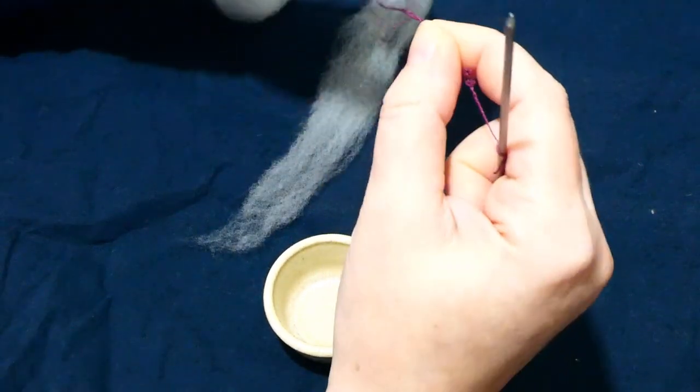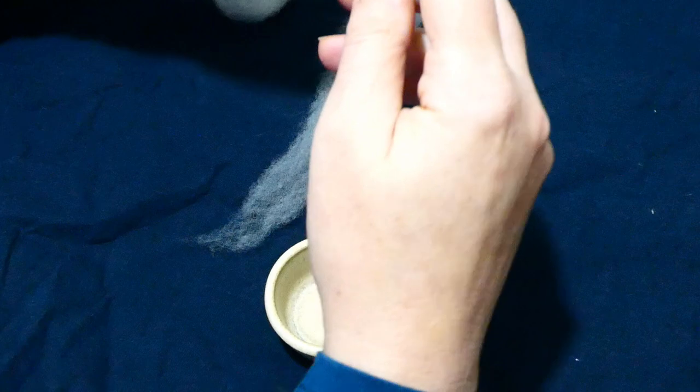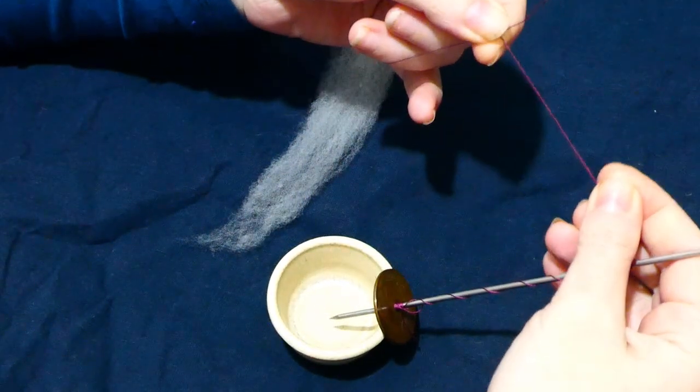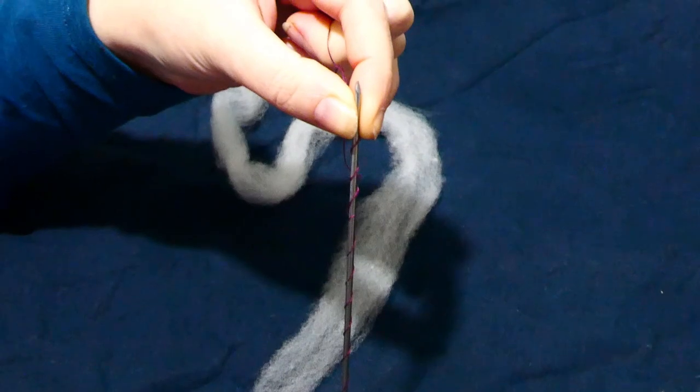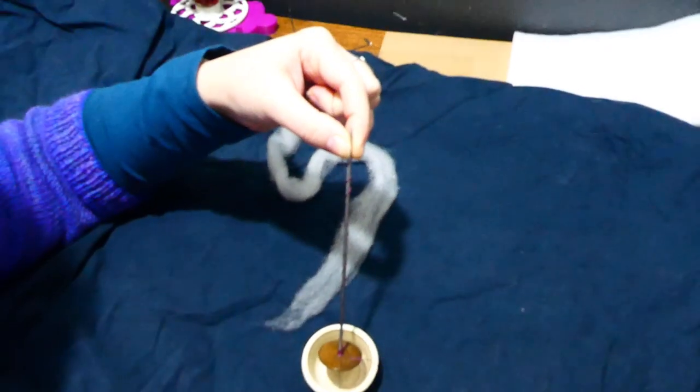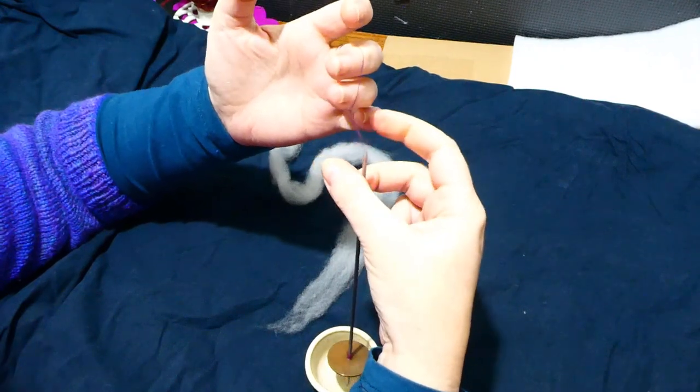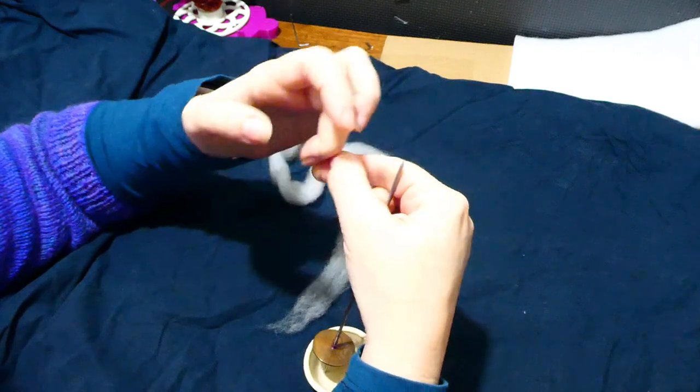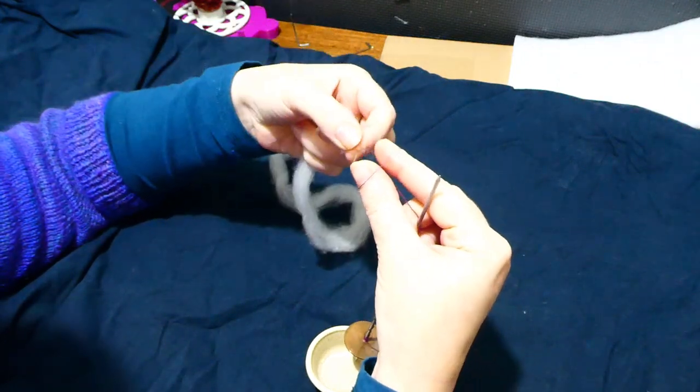So first what I will do is pinch off the loop, put loads of twist into this piece here of the leader. So I've got a lot of twist built up here. I'm not going to try and start off with three fibers, maybe ten or so, and we'll get down to three after we spin for a bit.